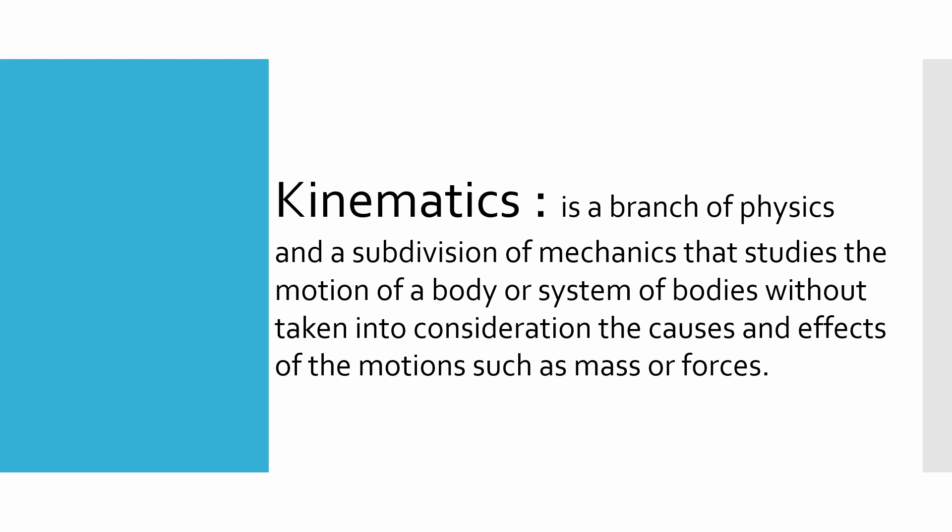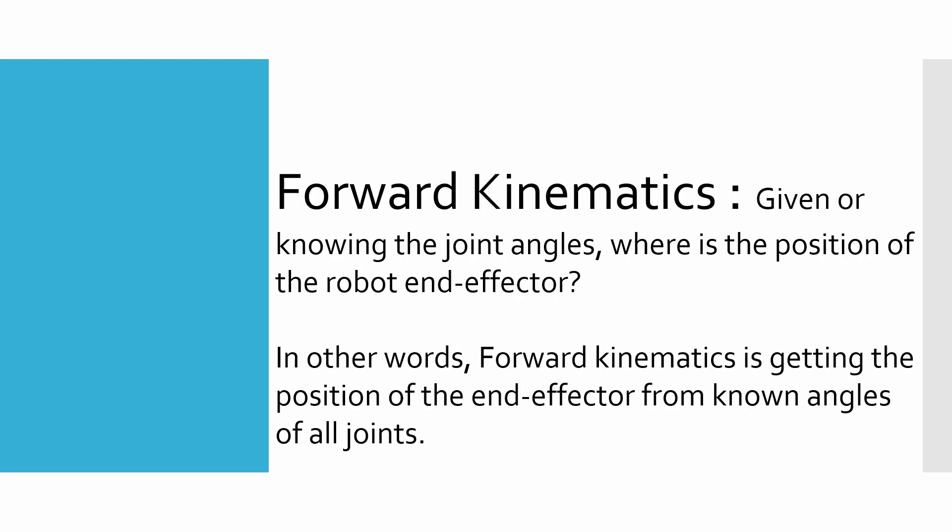In robotics there are two important aspects of kinematics. The first is forward kinematics: given the joint angles, where is the robot's end effector? In other words, forward kinematics is getting the position of the end effector from known angles of all joints.